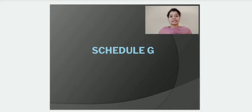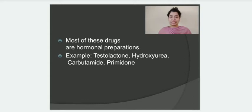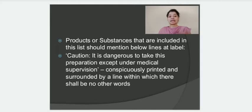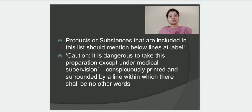Schedule G mainly contains hormonal preparations like cesarean, gliomycin, primidone, and hydroxyurea. Drug products included in Schedule G should have a label mentioning a caution statement that this particular drug product is dangerous for consumption except under expert medical supervision. This caution should be mentioned on the label of all drugs belonging to Schedule G.